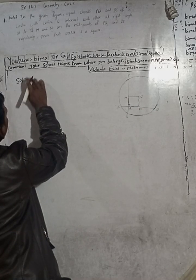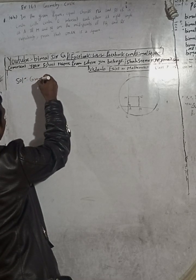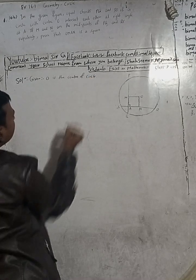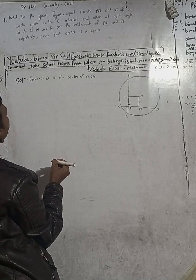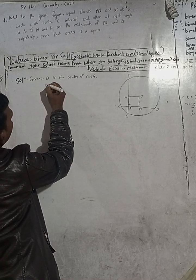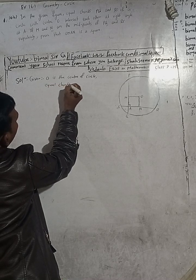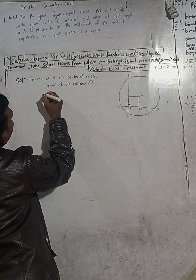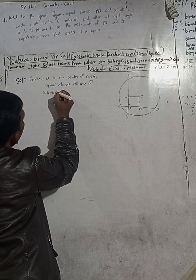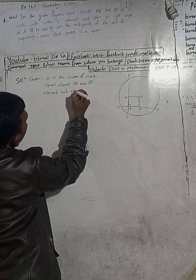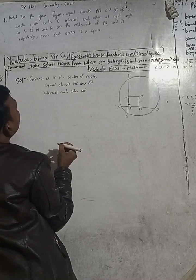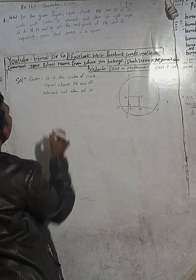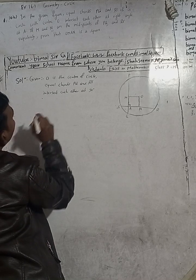First of all, write the given. Given: O is the center of the circle. Equal chords PQ and RS intersect each other at right angles — that means 90 degrees — at point A.